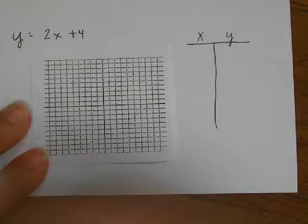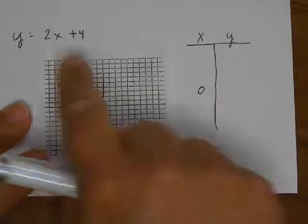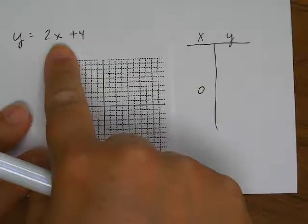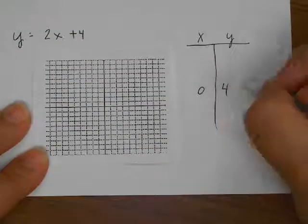So for instance, I could try, and I usually try to start with 0. 2 times 0 is 0, 0 plus 4 is 4, so I have a point at 0, 4.